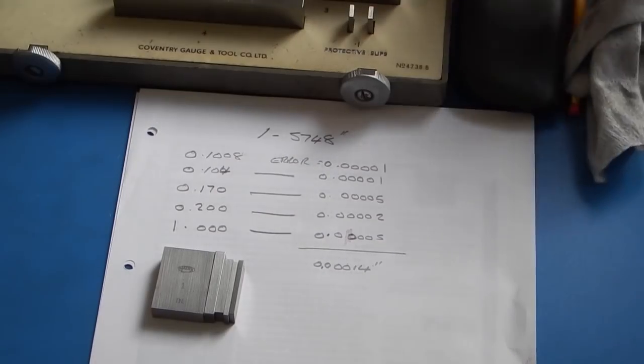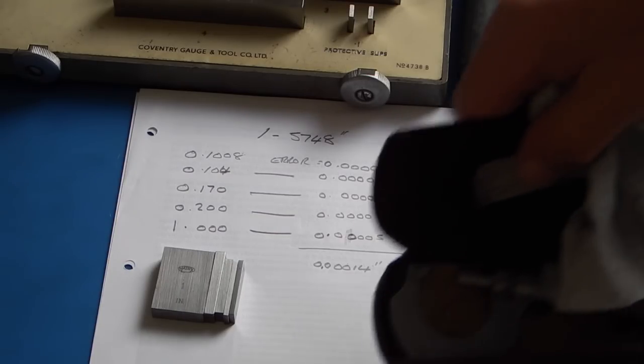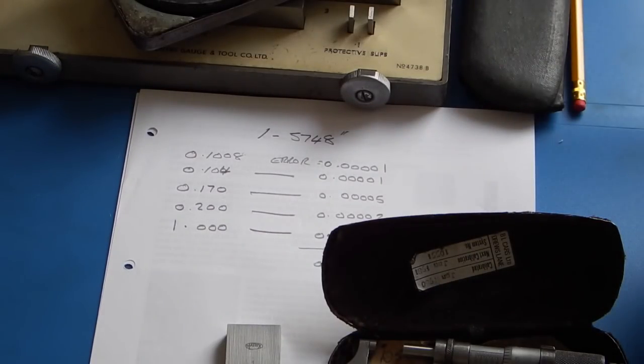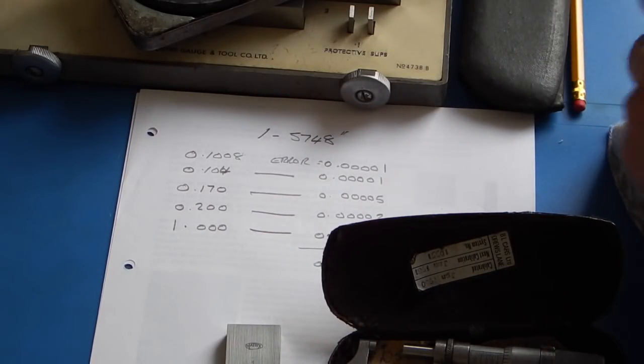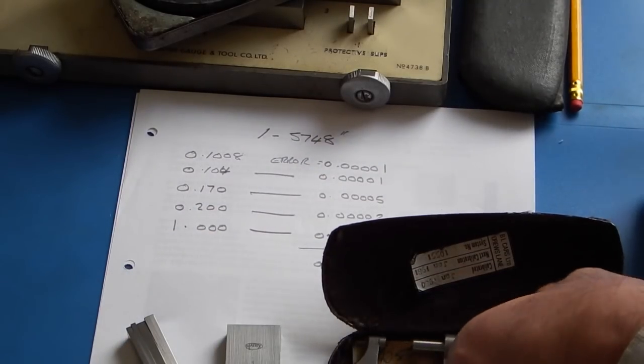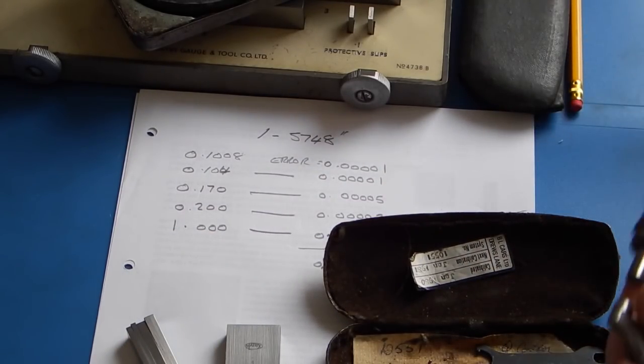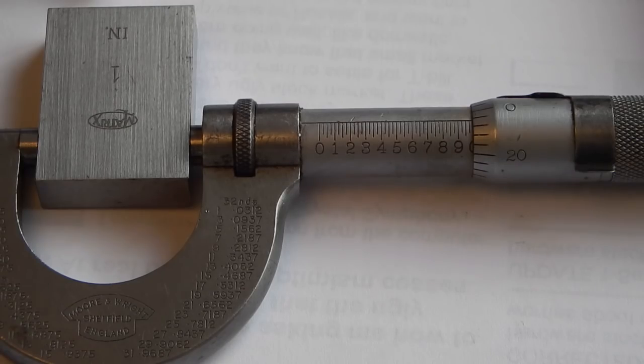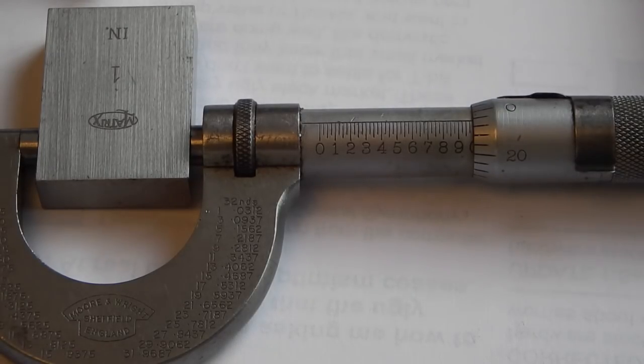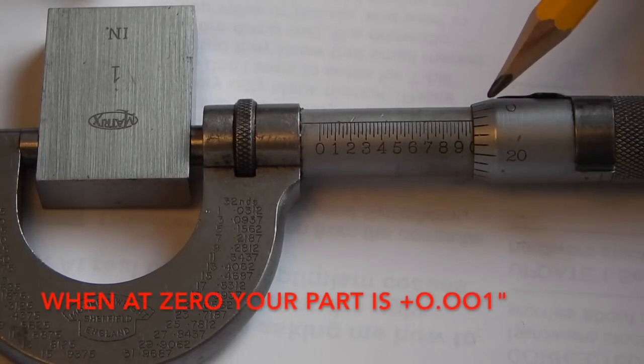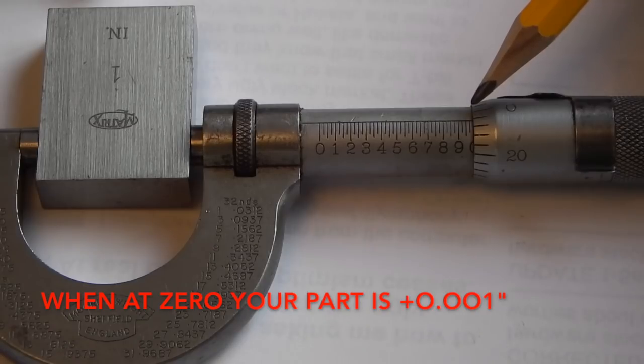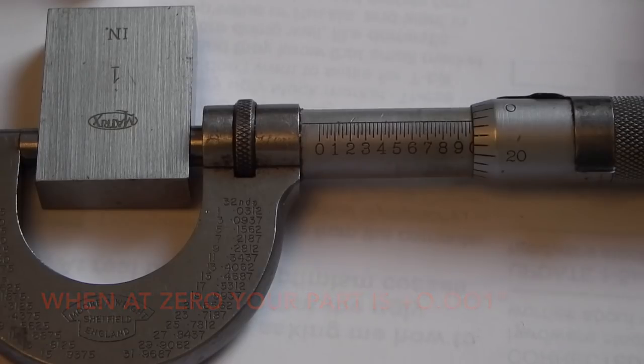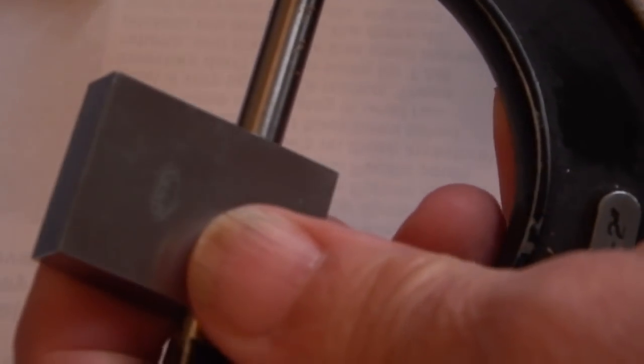Now I've got a selection of micrometers here. This is the one I use mainly on the lathe. This is a one to two. I'll use a one inch slip gauge. We'll just check this micrometer with the slip gauge. Now I think you might just be able to see that this is actually reading about a thousandth on what it should be. Now I had no way of testing this micrometer. I've been using it for years.